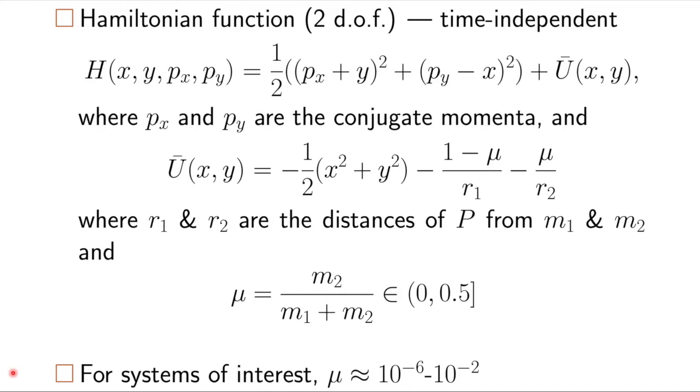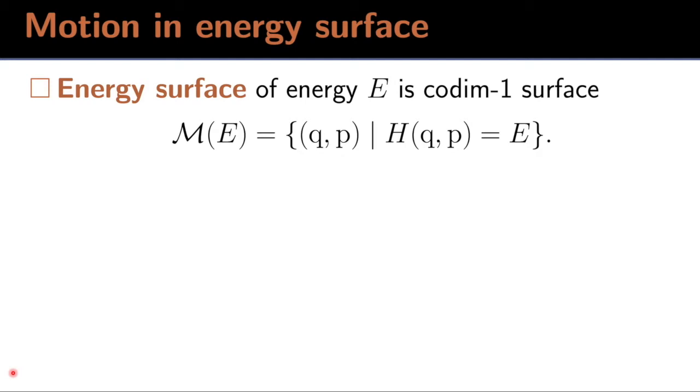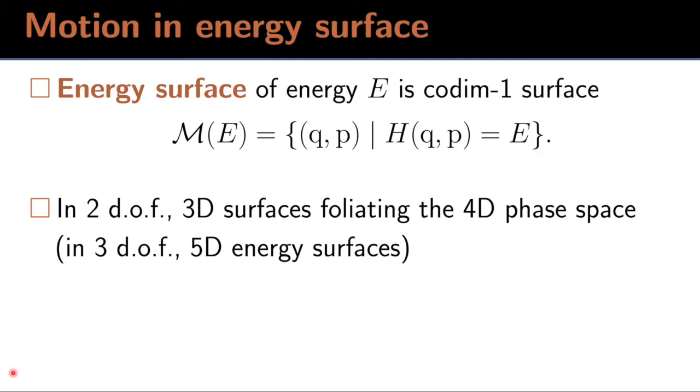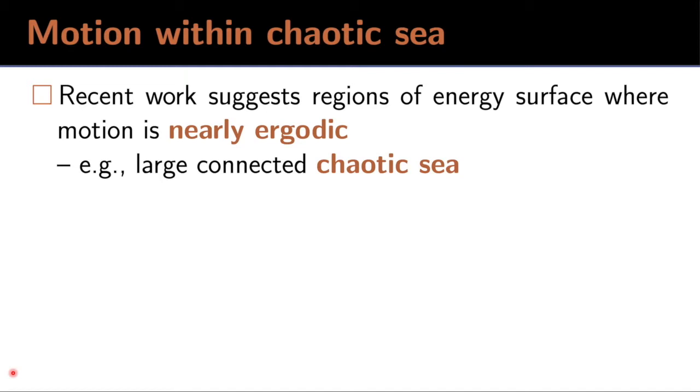We consider motion on energy surfaces, or energy shells, to borrow language from chemistry. These are co-dimension 1 surfaces. So in the two degree of freedom problem, we have three-dimensional energy surfaces foliating the four-dimensional phase space. Recent work suggests that motion on large portions of the energy surface are nearly ergodic. That is, we have a large connected chaotic sea.